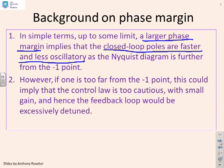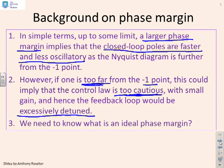Similarly, if you are too far from the minus one point, this could imply that the control law is too cautious—your gain is too small, and the feedback loop would be excessively detuned.